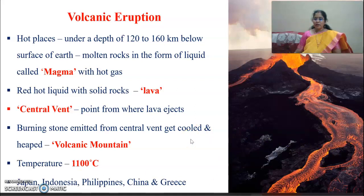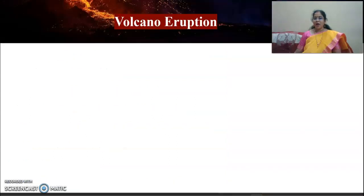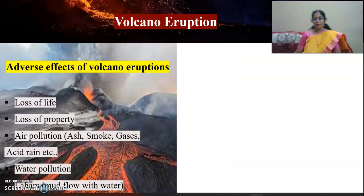The central vent is the place where lava ejects. Burning stones emitted from the central vent get cooled and build up, forming a volcanic mountain. The temperature of volcanoes can reach one thousand degrees Celsius. Japan, Indonesia, Philippines, China, and Greece are known for volcanic eruptions.